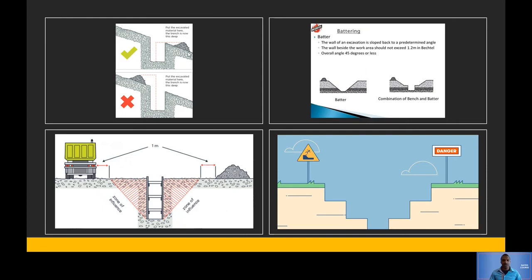When trenching on a slope, place your excavated material on the downside — not the top side, which is weaker and can slide in. Battering means angling the slope of the wall of an excavation back to a predetermined angle.